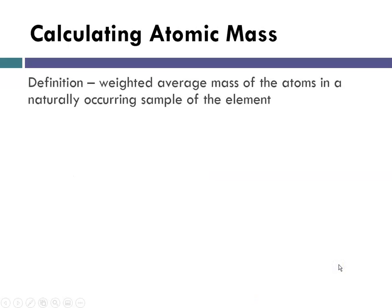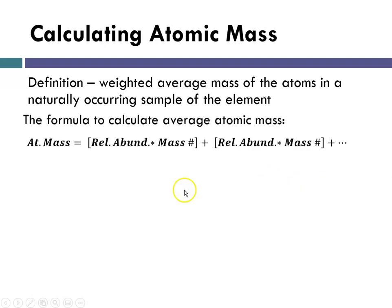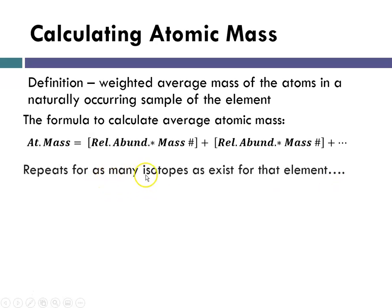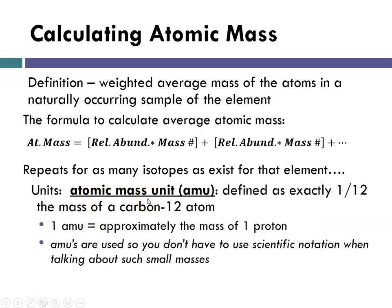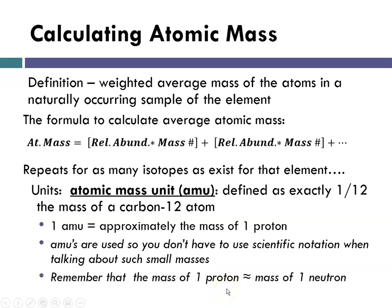Now, calculating atomic mass. The definition of atomic mass is the weighted average mass of the atoms in all of the naturally occurring isotopes of that element. The formula takes the relative abundance times the mass number, summed for all isotopes. The units are AMUs — atomic mass units — and 1 AMU is defined as exactly one-twelfth the mass of a carbon-12 atom, which is roughly the mass of a proton. AMUs are used because the actual masses are very small numbers, and the mass of one proton is equivalent to the mass of a neutron.